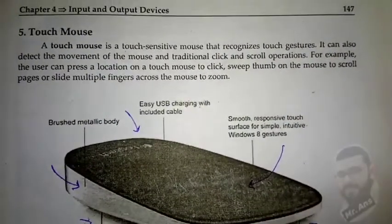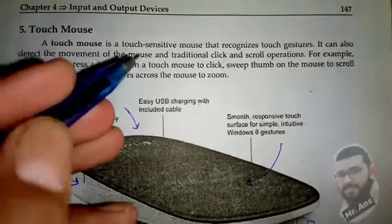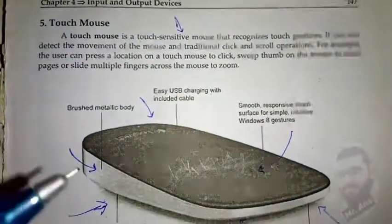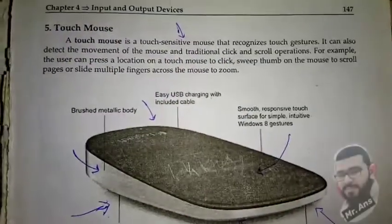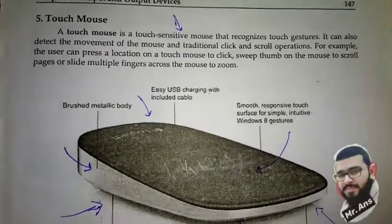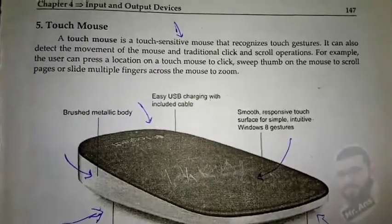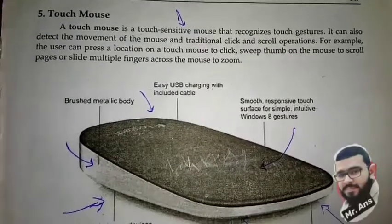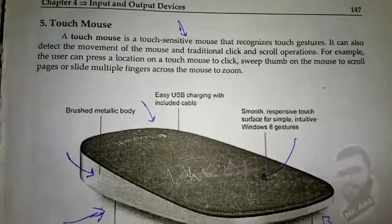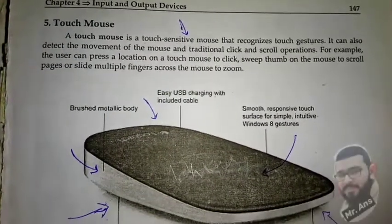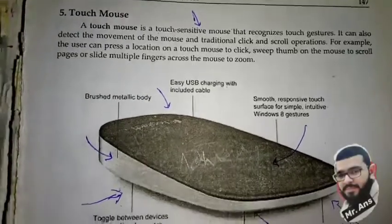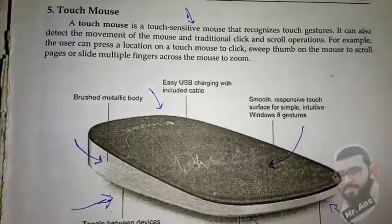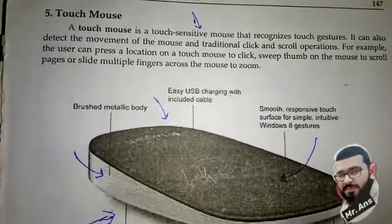A touch mouse is a touch-sensitive mouse that recognizes touch gestures. It can also detect the movement of the mouse and traditional click and scroll options. For example, the user can press a location on the touch mouse to click, sweep a thumb across the mouse to scroll pages, or slide multiple fingers across the mouse to zoom the screen.